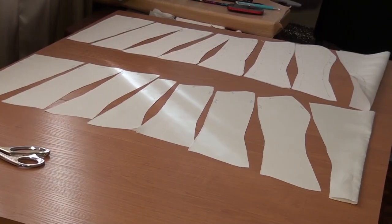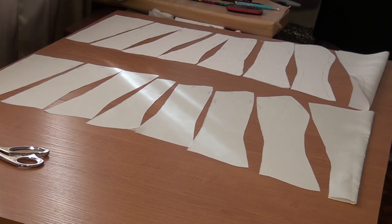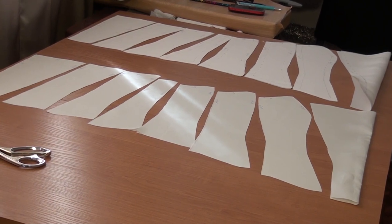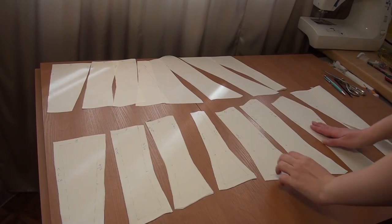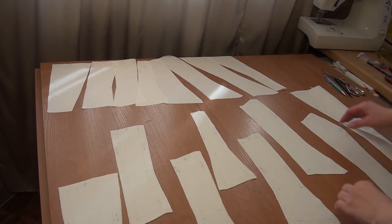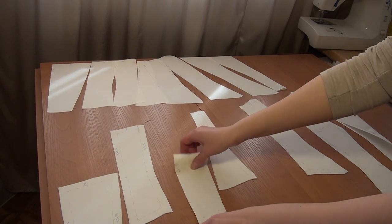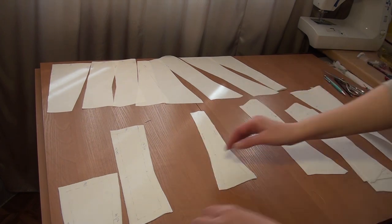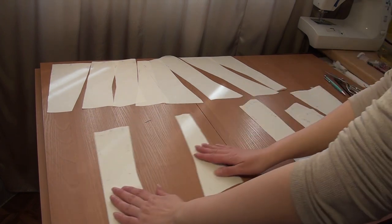All details corsets are cut out. Now I take details from setting number two, number four, six and eight. Details of the corset number one, three, five and seven I put aside separately.